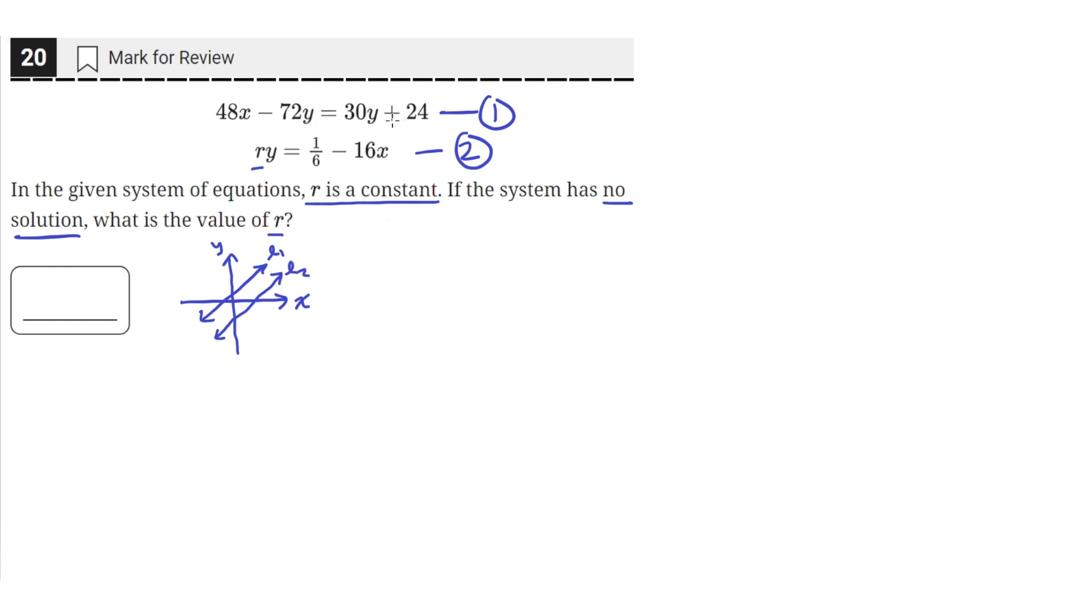So the first equation, let's write it in the form y equals mx plus b. We can do that by moving this 48x to the other side. So we'll be left with negative 72y equals negative 48x plus 30y plus 24. So we just subtracted 48x, and then let's move the 30y to the other side by subtracting 30y from both sides. So on the left, we'll be left with negative 102y equals negative 48x plus 24.